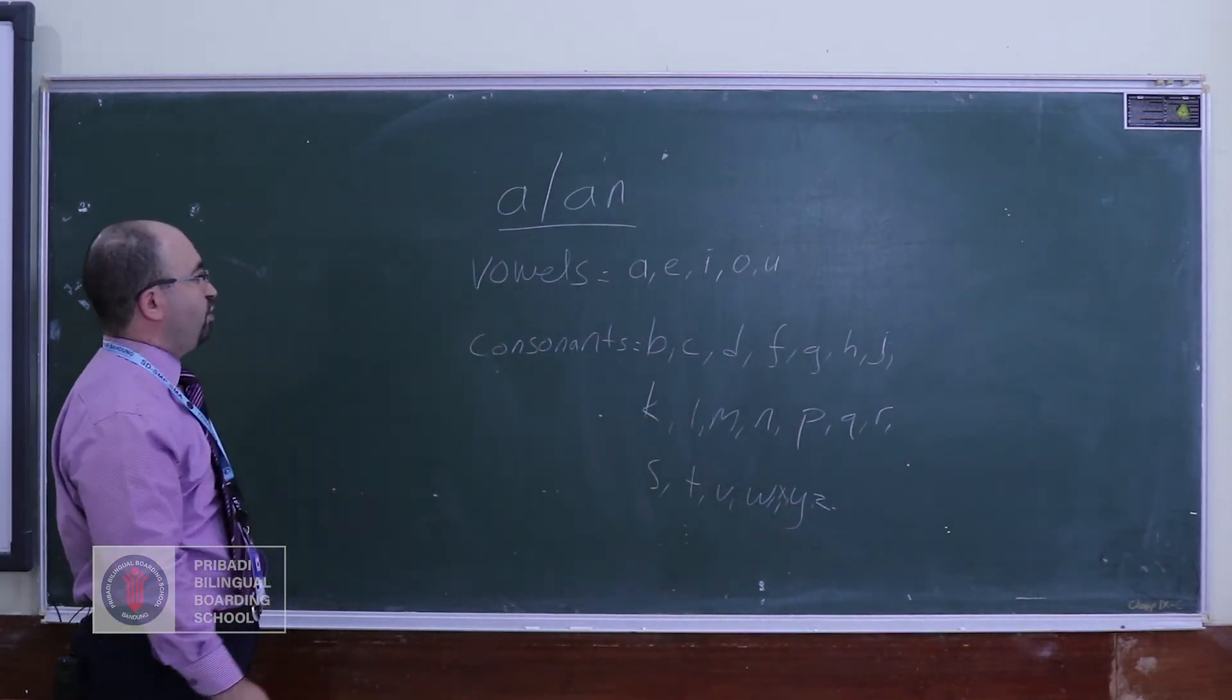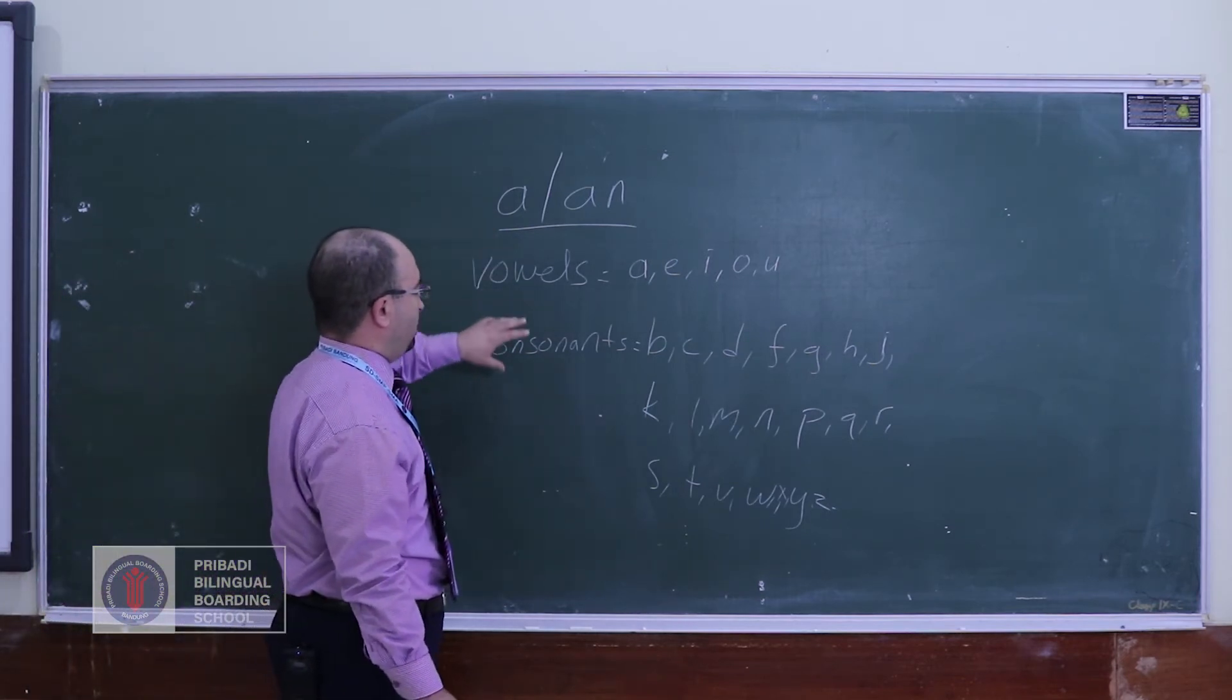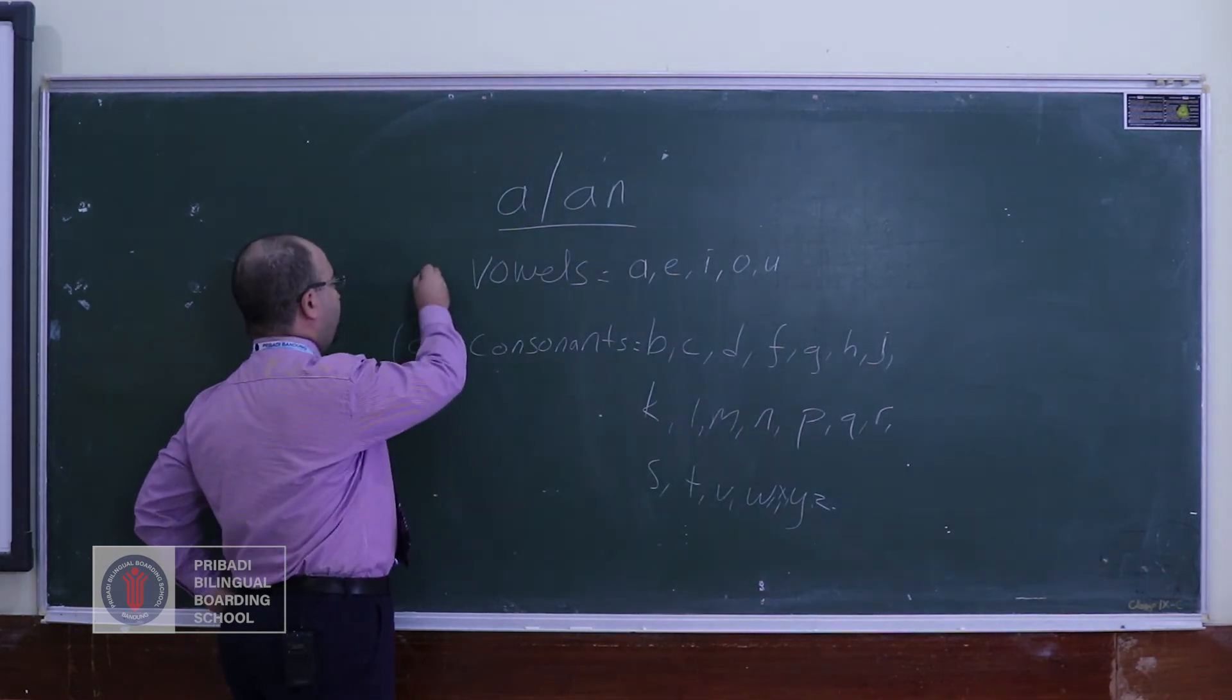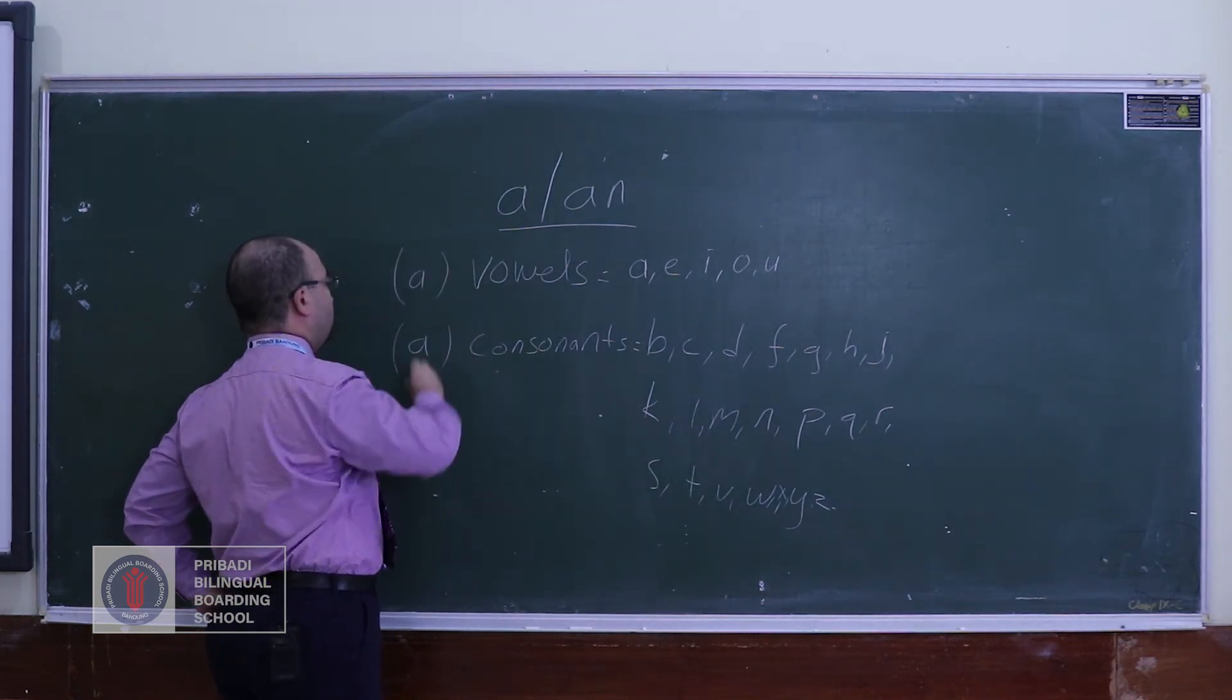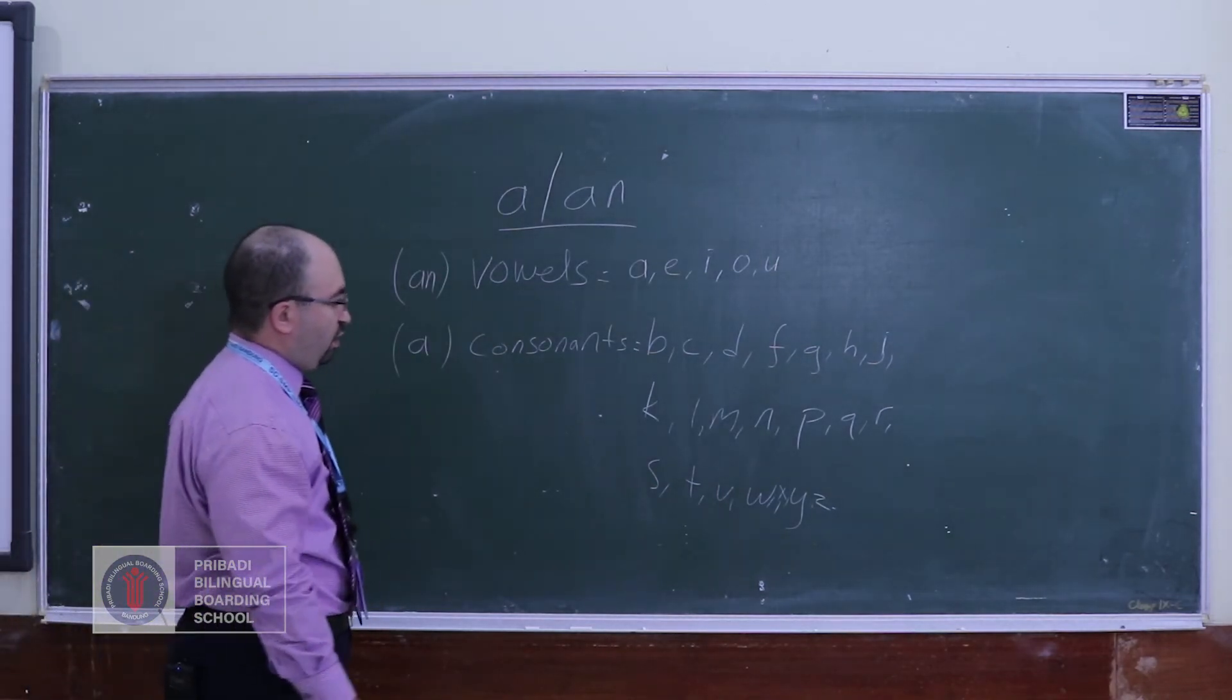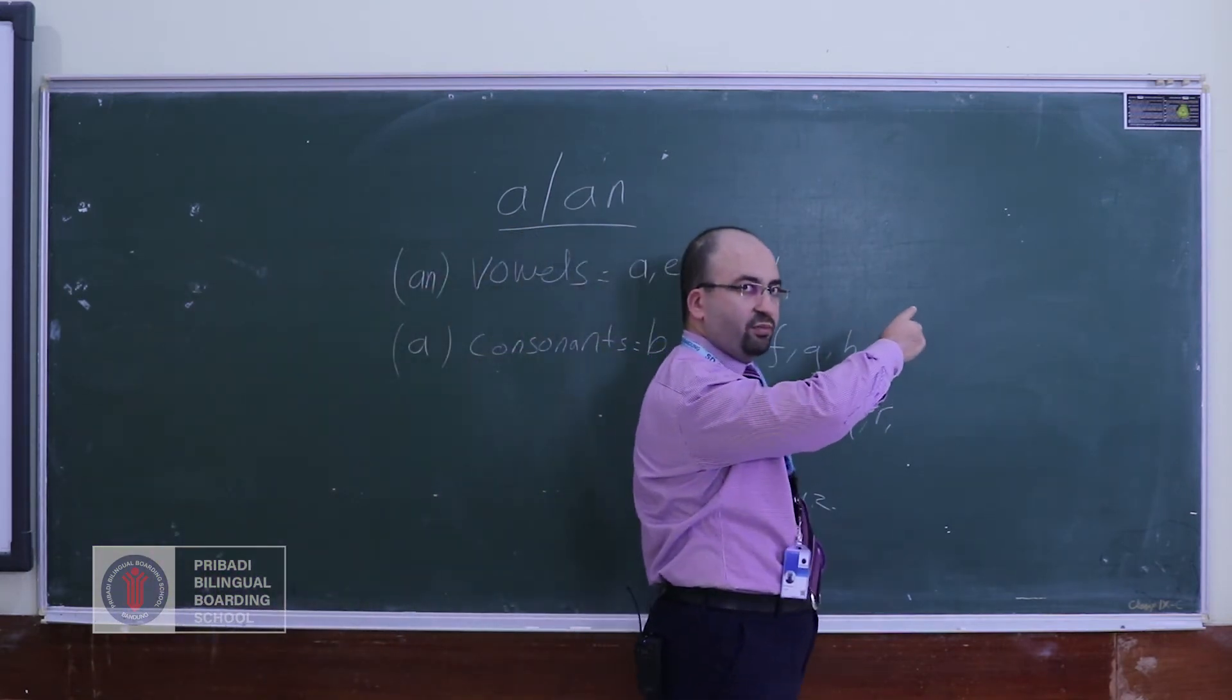So we use 'a' before consonants and 'an' before vowels. Let me clear both, I will just continue here with some examples.